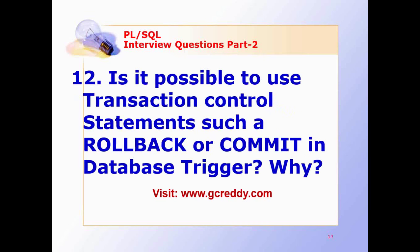Is it possible to use transaction control statements such as ROLLBACK or COMMIT in a database trigger, and why? It is not possible because triggers are defined for each table, and if you use COMMIT or ROLLBACK in a trigger, it affects logical transaction processing.